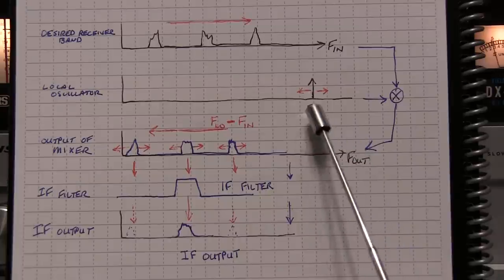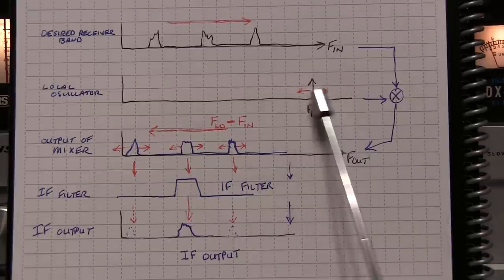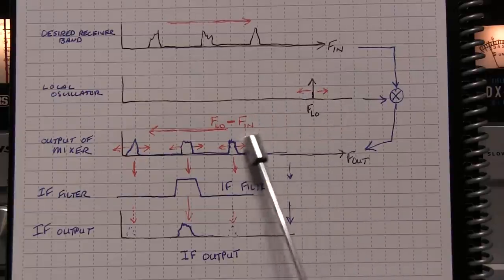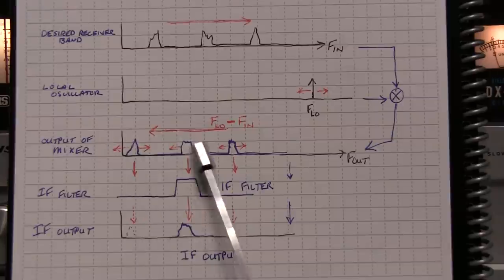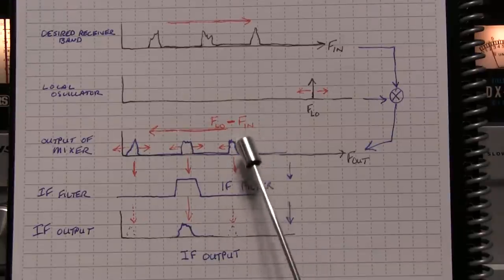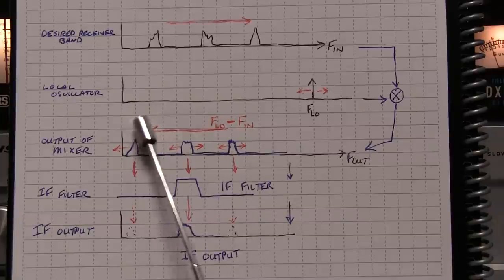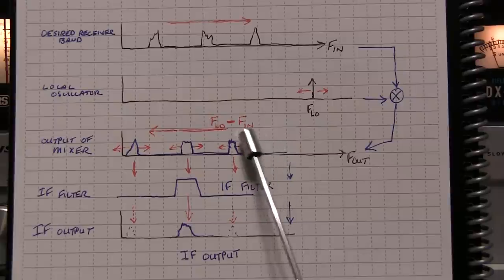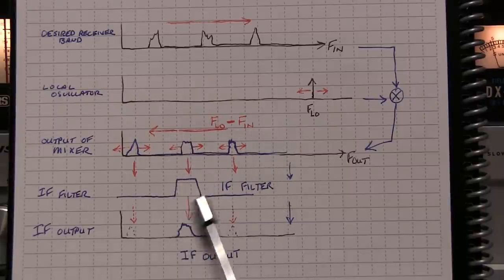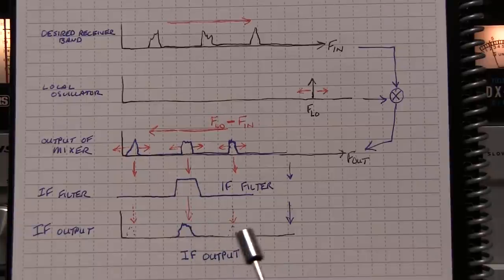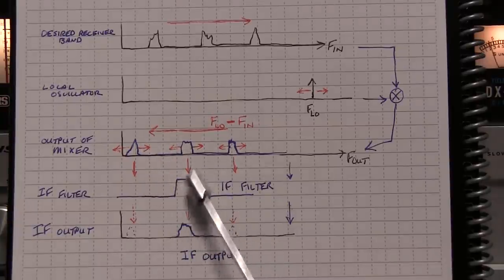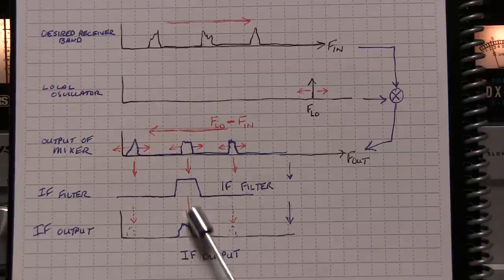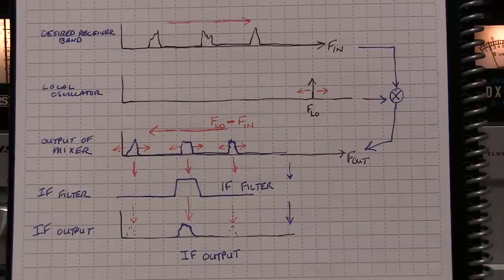Now when you tune the receiver, as we talked about, you're tuning the frequency of the local oscillator. So when that tunes back and forth, this difference product also moves back and forth the same way. And the whole idea is to move this converted spectrum back and forth so that the particular signal of interest that you want to receive lands inside the IF filter. It's a fixed frequency filter. So whatever signal lands inside that IF gets through, and everything else on either side of it gets blocked.